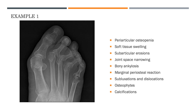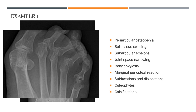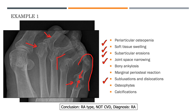Here is a case of a foot. In the forefoot, we can see periarticular osteopenia - the first clue of inflammatory arthropathy. Second, there is significant soft tissue swelling involving the phalanx. We can also see subarticular erosions, joint space narrowing, and subluxations with changes in angulation of the bone. Putting all of this together - erosions, subluxations, and soft tissue swelling - this is a typical presentation of rheumatoid arthritis.